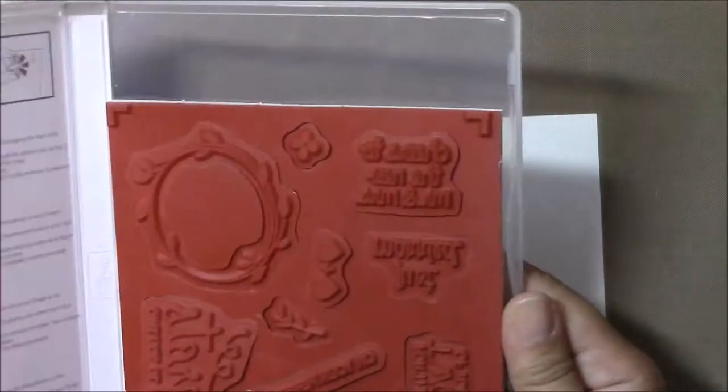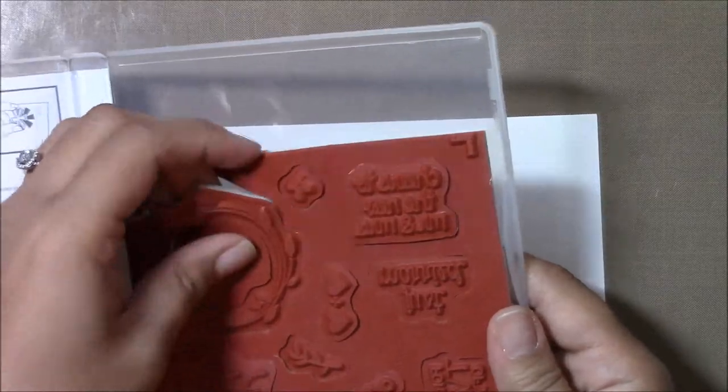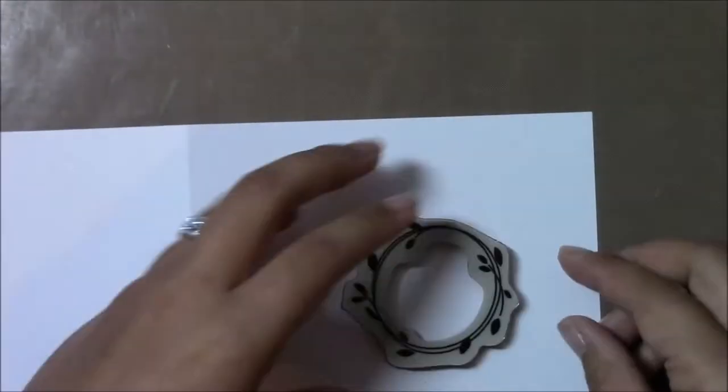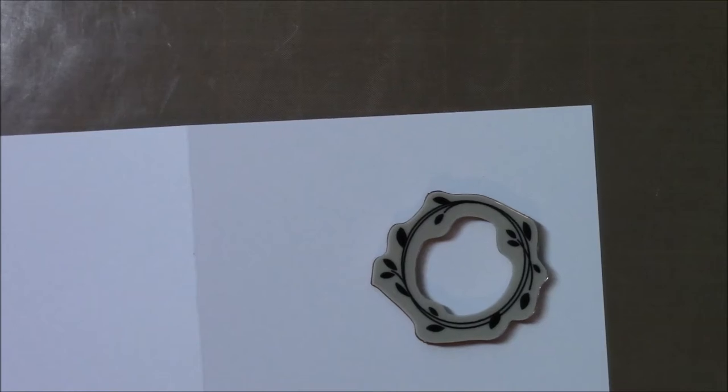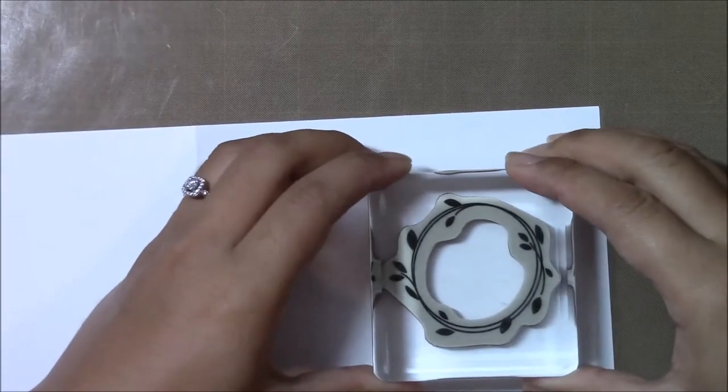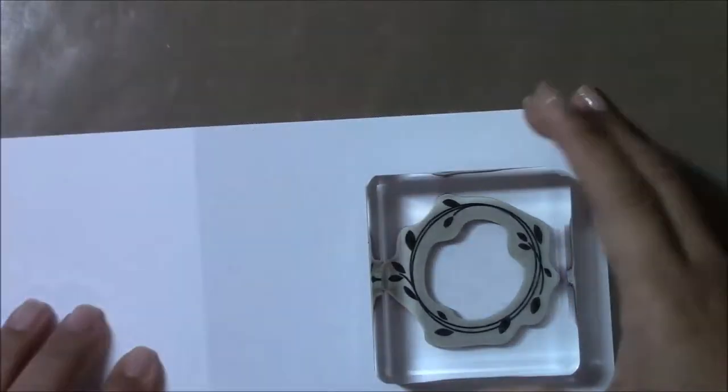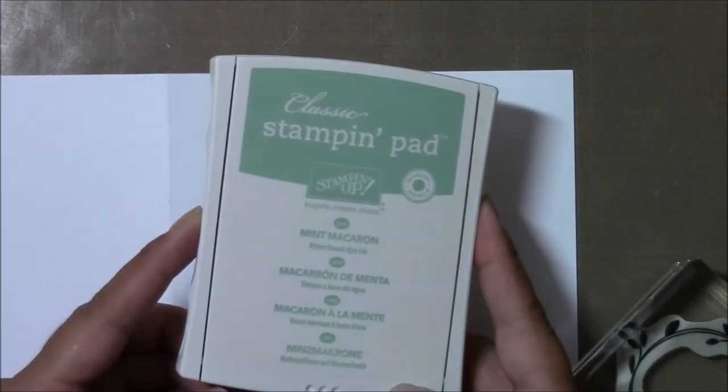For the most part, this card is going to be a one-layer card. I do add a thin strip of cardstock down at the bottom towards the end, but for the most part it's going to be a one-layer card. I'm going to stamp directly on this card base. It's 110 pounds recollection, so I'll go ahead and stamp this first image of this circular vine using mint macaron.